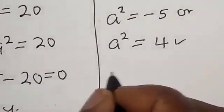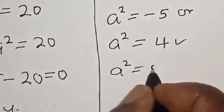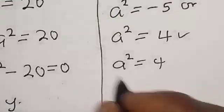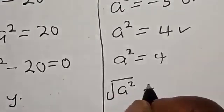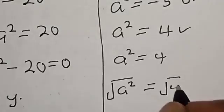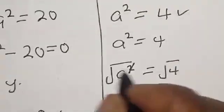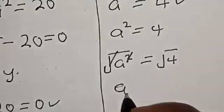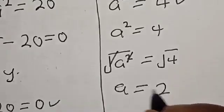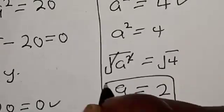Let's work with this. From a square is equal to 4, let's take the square root of both sides. Square root of a square is equal to square root of 4. This one will cancel this, and square root of 4 is 2. A is equal to 2. That is the value of a.